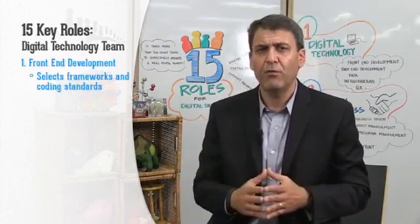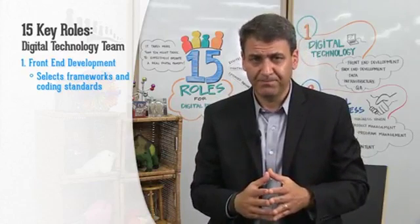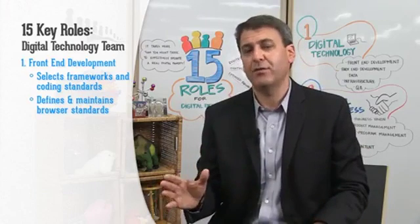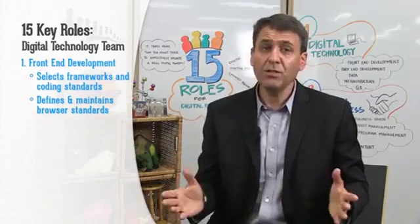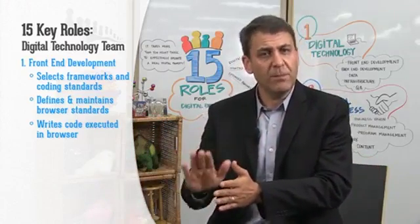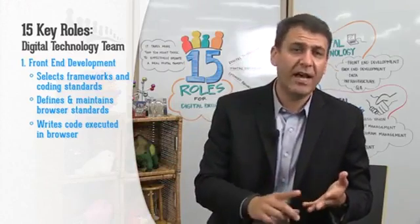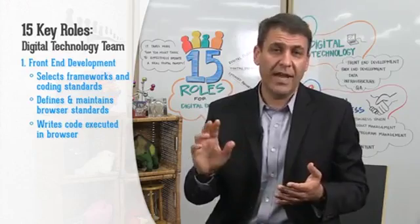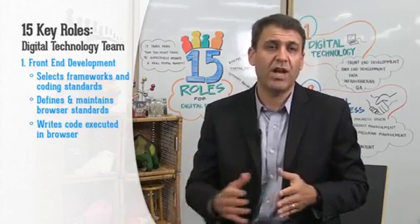Working closely with the digital business team is the digital technology team, responsible for engineering and technical implementation. We generally see five key roles or competencies on that team. The first is front end development. The front end development role is responsible for selecting the frameworks and front end coding standards for HTML, JavaScript, possibly Flash, or any other client-side technologies used in the product. They're responsible for defining and maintaining browser standards — which browsers will be supported and to what degree — and for writing all code that executes in the browser, including HTML5, JavaScript, as well as mobile code executing on iPhone or Android devices, such as Objective-C or Java.